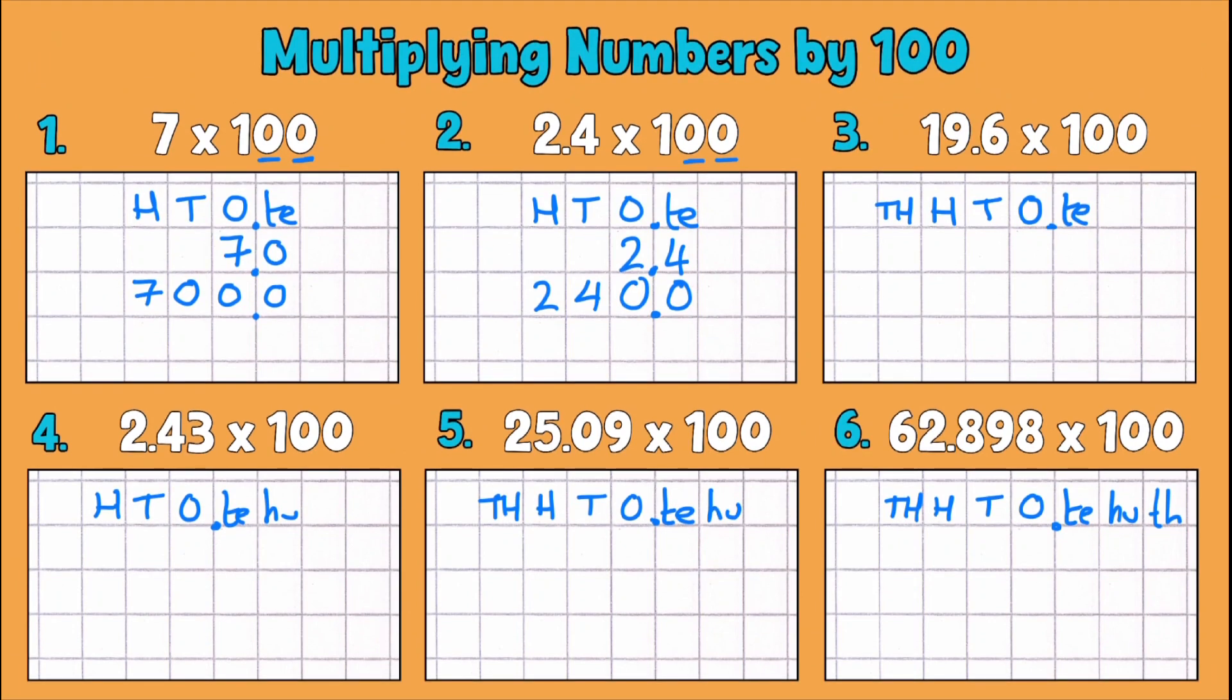So our next number is 19.6 multiplied by 100. So I'm going to put that in there we go and our decimal place just below it. Now just like the last examples everything will move two places over to the left to make it a hundred times bigger.